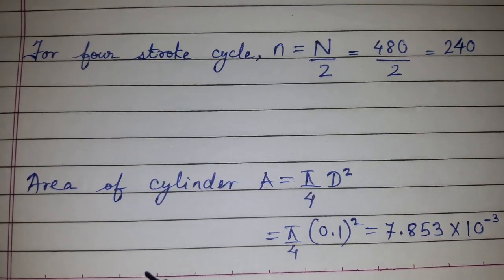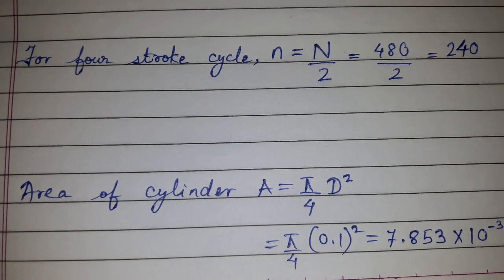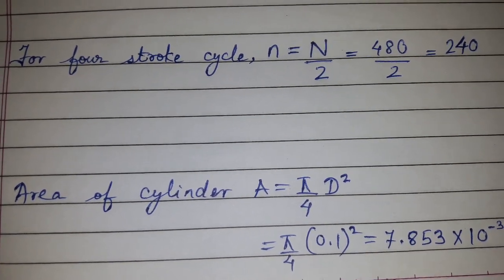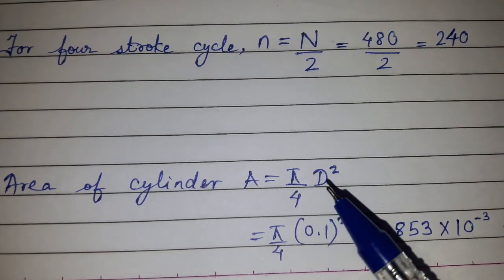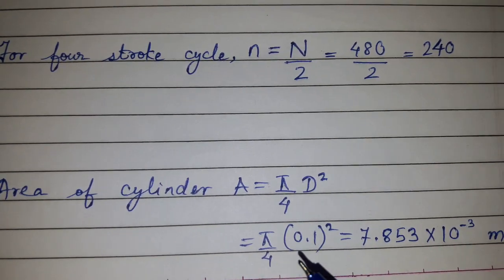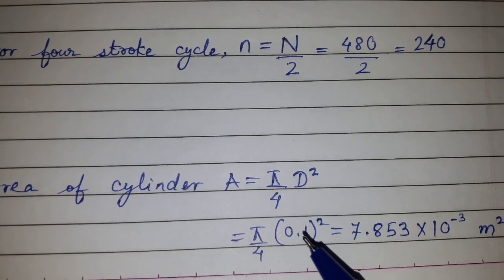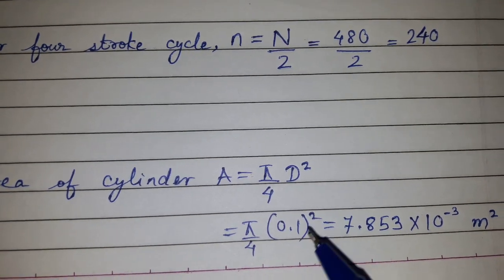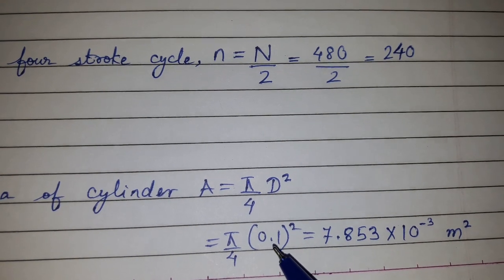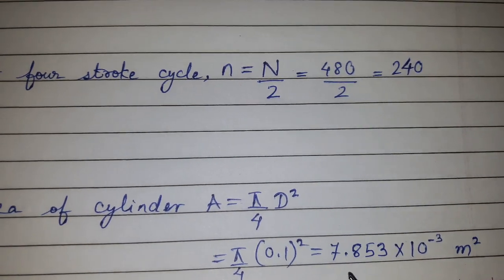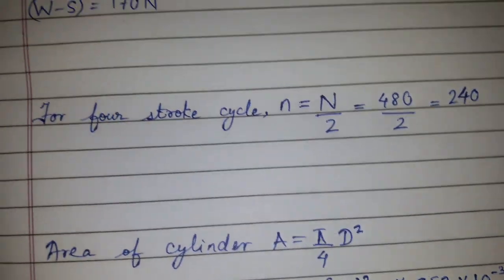We need to calculate the piston area (A) for the indicated power formula. A = π/4 × d² = π/4 × (0.1)² = 7.853 × 10⁻³ m².